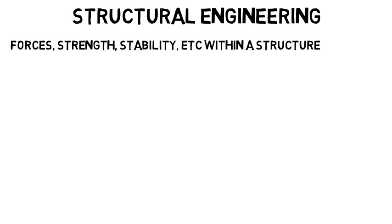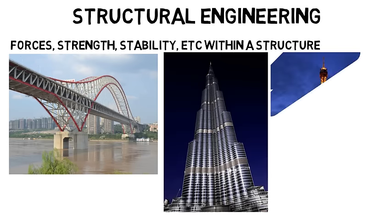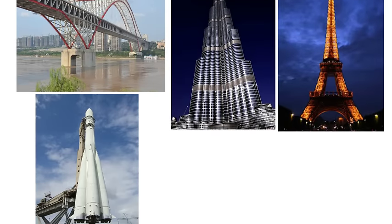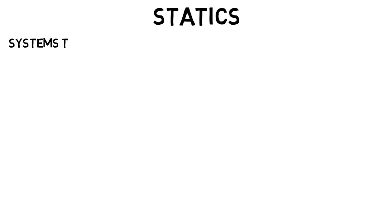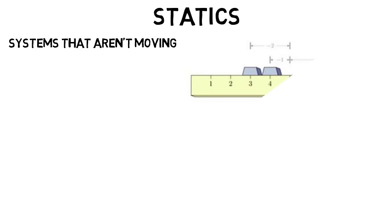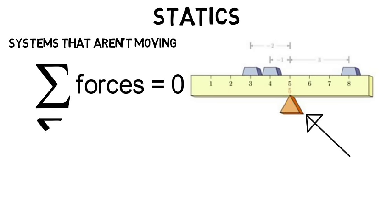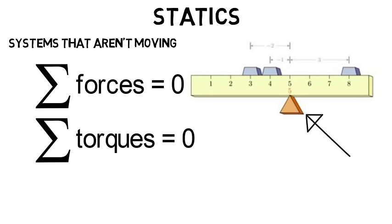Structural engineering is about calculating and understanding the forces, strength, stability, and so on within a structure. It could be a bridge, a skyscraper, a landmark, or even a spacecraft or aircraft. These structures are very heavy and need to support their own weight so that they don't collapse. This subfield is the most math intensive and has lots of physics. All civil engineers will take a class called statics, which is all about the forces and systems that are not moving. In basic physics, you may have done a statics problem — where does this support have to be for the system to be totally balanced and therefore not moving? You sum all the forces, which equal zero, and all the torques, which equal zero. And that's the basics of statics.